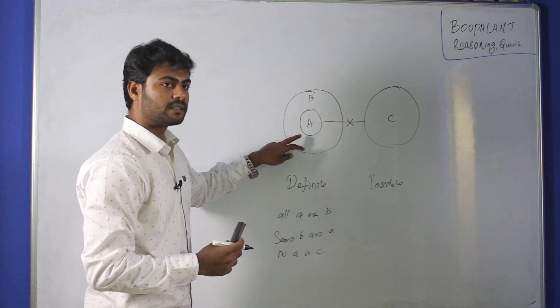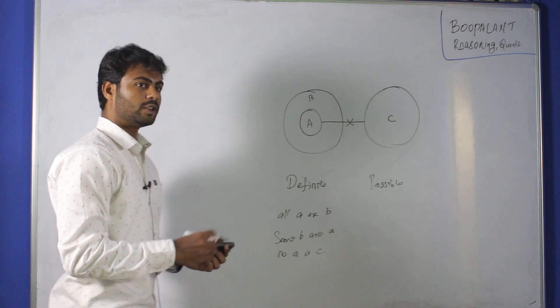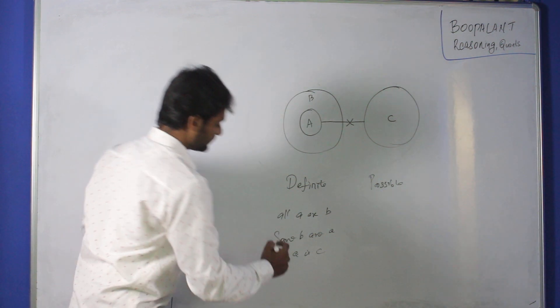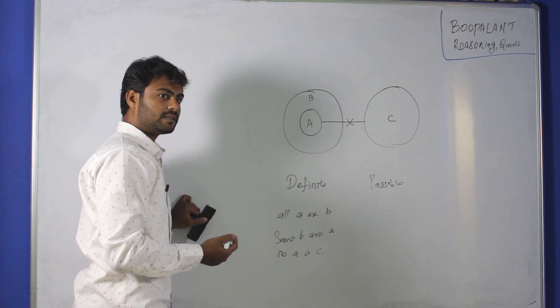Some A is B sort of limit. All A or B are possible. You write that one also. Some A is also possible. Some A is B, some B is A.